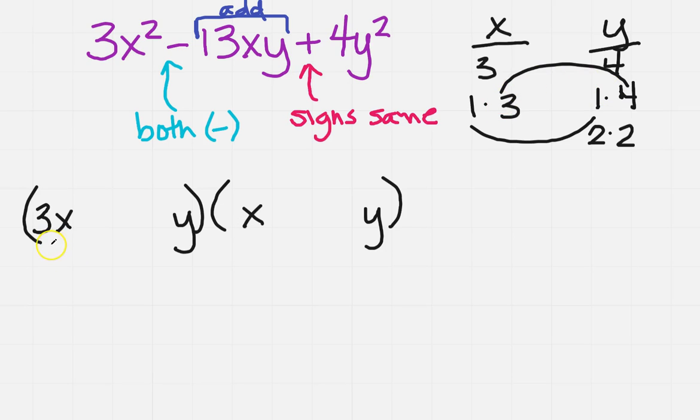Now, we said the 3 has to go with a 4. So the 3 has to go with a 4. And we said a 1 and a 1. So there's my 1 and my 1. Now, up here we said the signs are the same. They're both going to be minus.